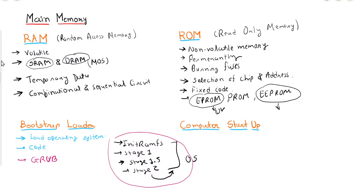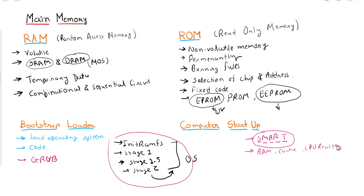Whenever a computer starts up and you press the power button, first SMART (Self Monitoring and Reporting Technique) checks whether all peripheral devices are working properly. Then RAM, cache memory, and CPU registers are all reset. After that, initramfs, Stage 1, Stage 1.5, and Stage 2 file systems are loaded, and the operating system starts. In the next tutorial, we will discuss RAM chips and how memory addresses are created.